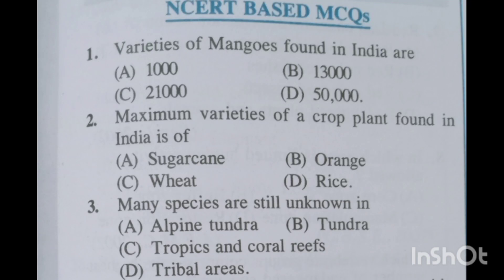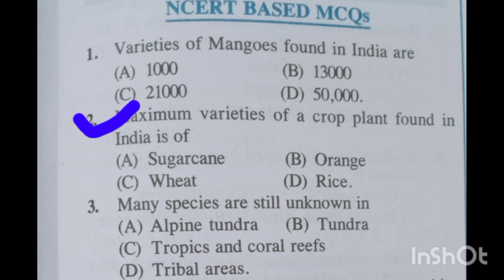I am going to discuss NCERT-based MCQs. Question number one: varieties of mangoes found in India are — option A: 1000, option B: 13,000, option C: 21,000, option D: 50,000. For this question, option A will be correct: 1000.